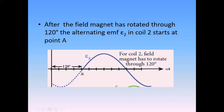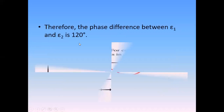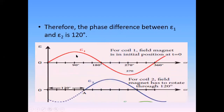So the second coil will start from point A, reach a peak value, come to zero, take a negative peak value, and then go off. Epsilon 1 is the EMF produced by the first coil; Epsilon 2 is the EMF produced by the second coil. The phase difference between Epsilon 1 and Epsilon 2 is 120 degrees — the first starts from zero and the second starts after 120 degrees.